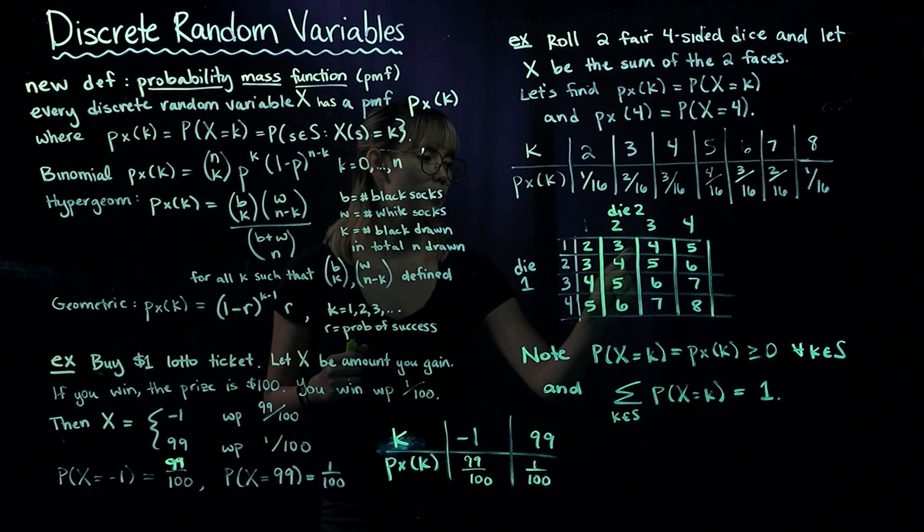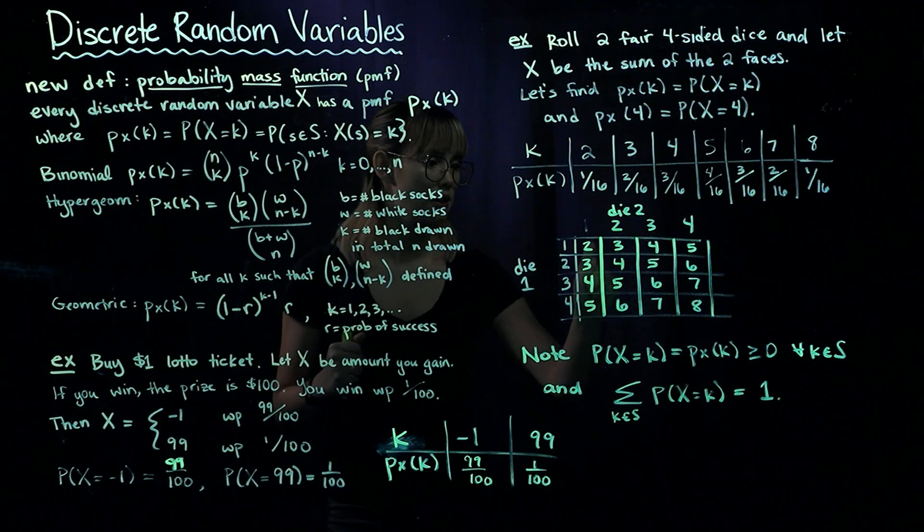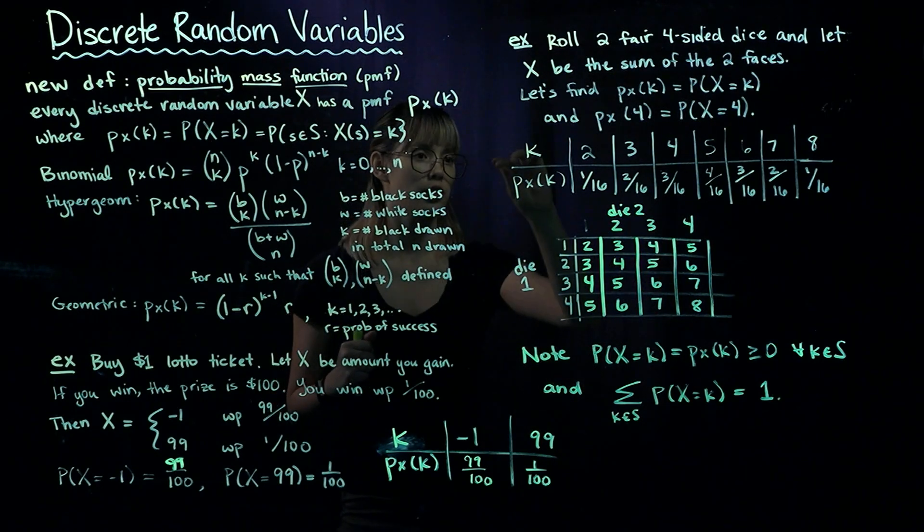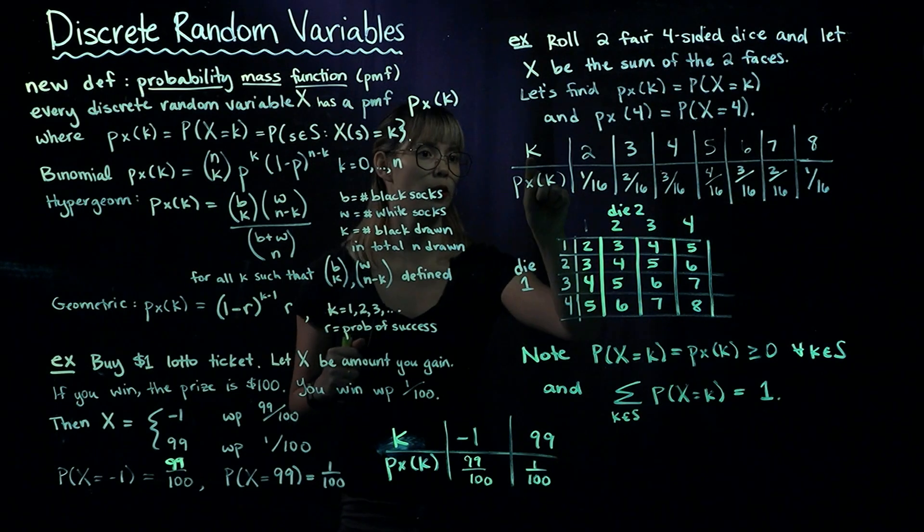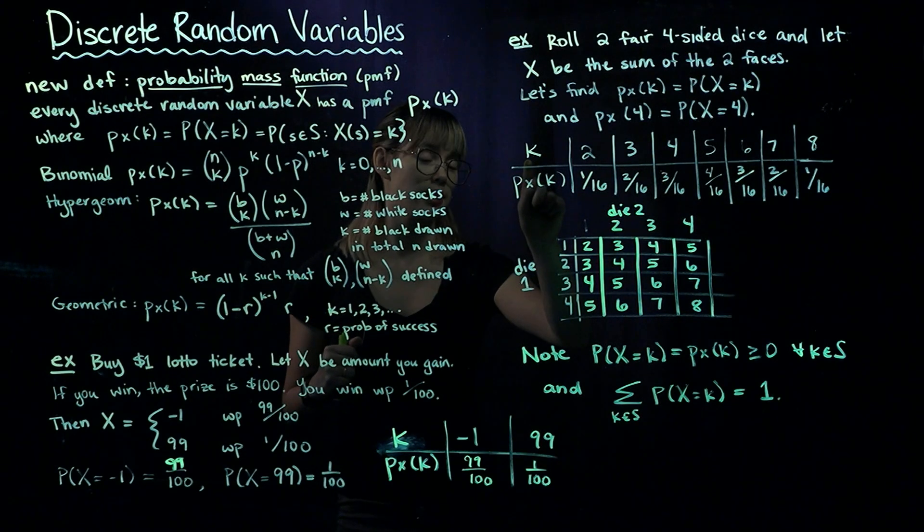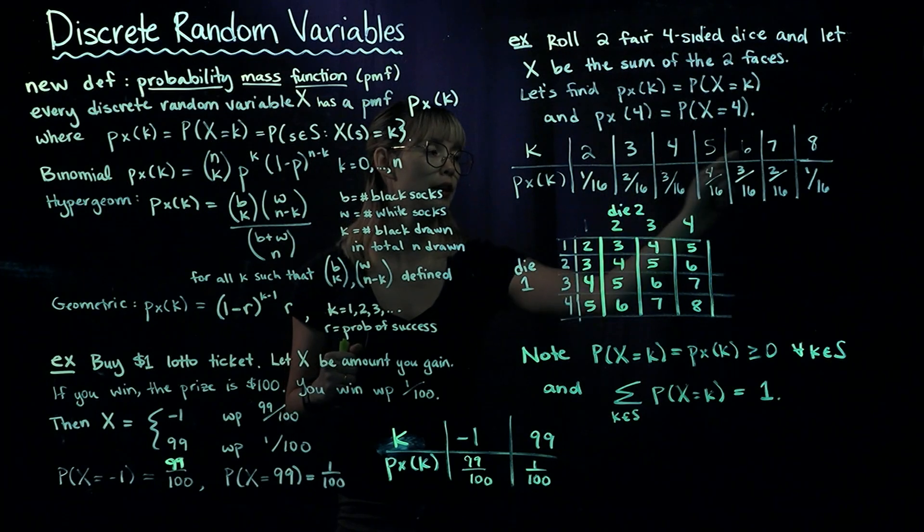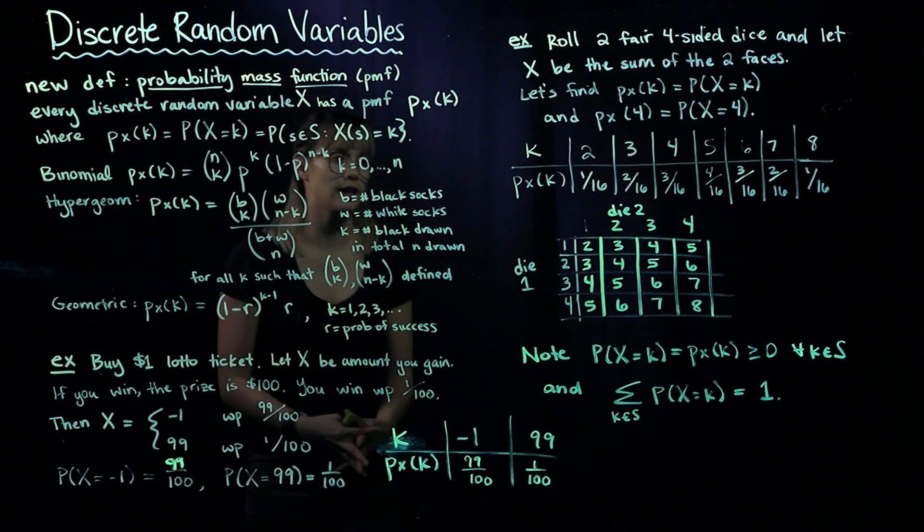These are the different values X can take on: 2, 3, 4, 5, 6, 7, or 8. Let's start our PMF table by writing down these possible values for X.